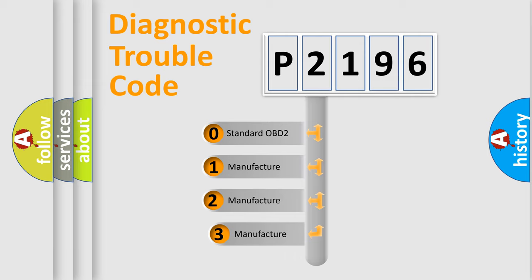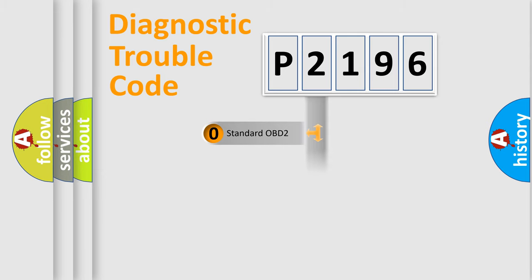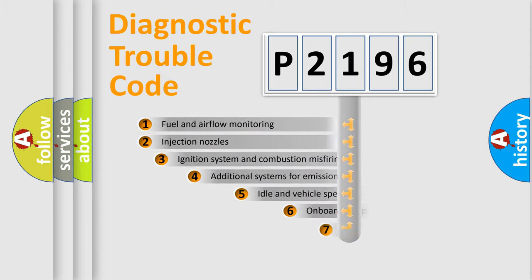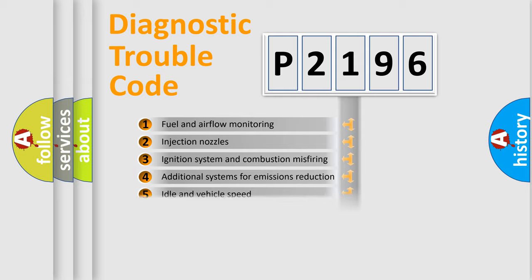If the second character is expressed as zero, it is a standardized error. In the case of numbers 1, 2, 3, it is a car-specific error. The third character specifies a subset of errors. The distribution shown is valid only for the standardized DTC code.